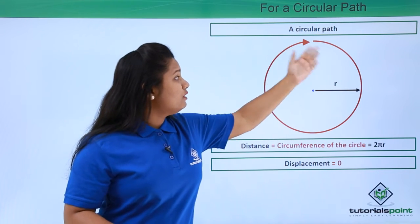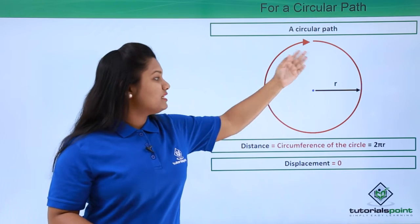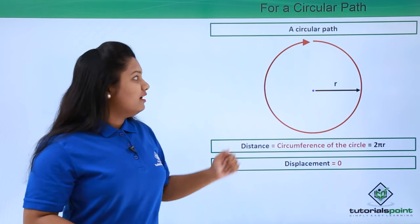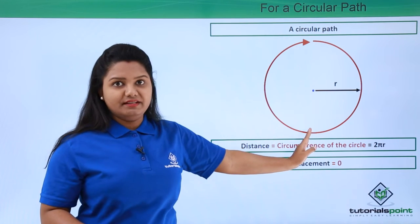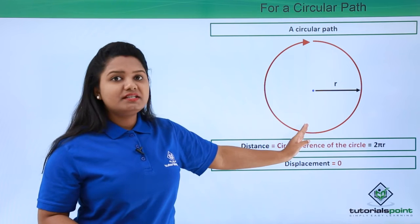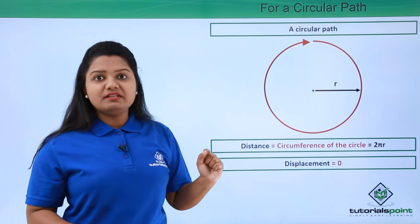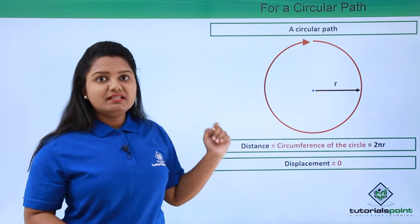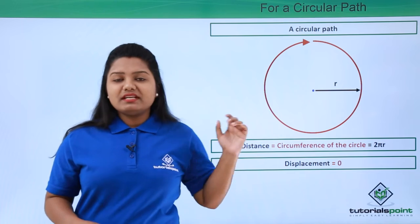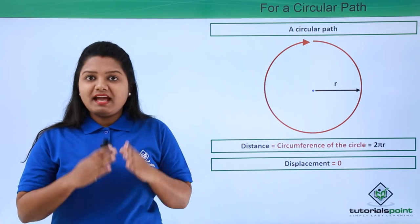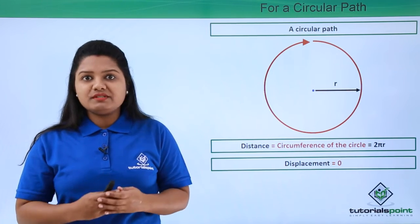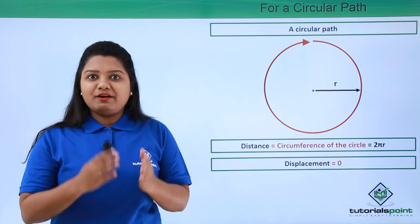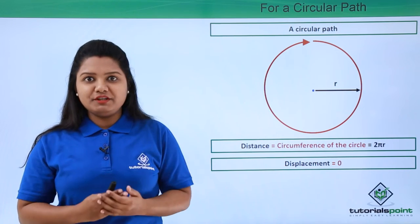If I don't cover the whole path and cover only halfway, the case will be totally different. Here the initial and the final point will not be the same, so the values of distance and displacement will change. So this was all about distance and displacement. In my next couple of videos I will be doing some problems related to distance and displacement. I hope this video was helpful — thank you.